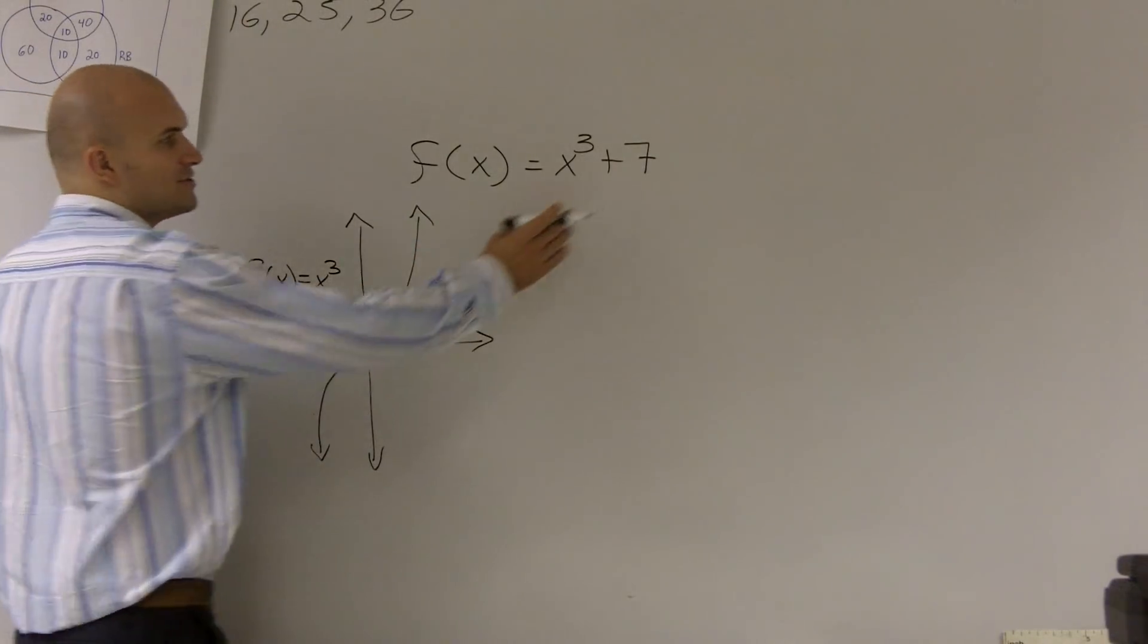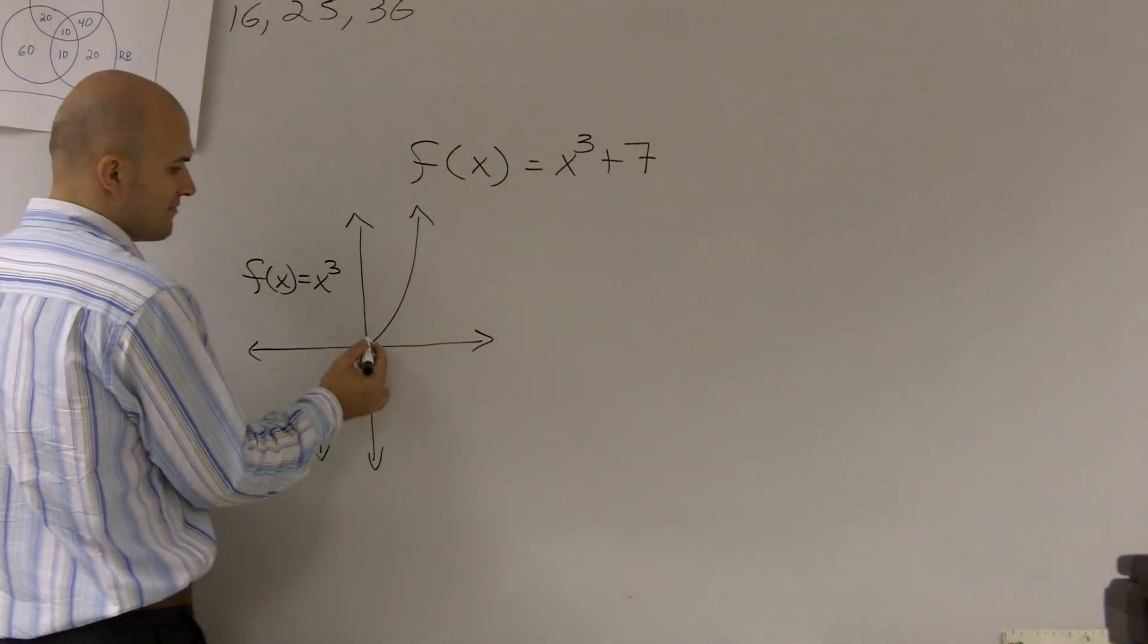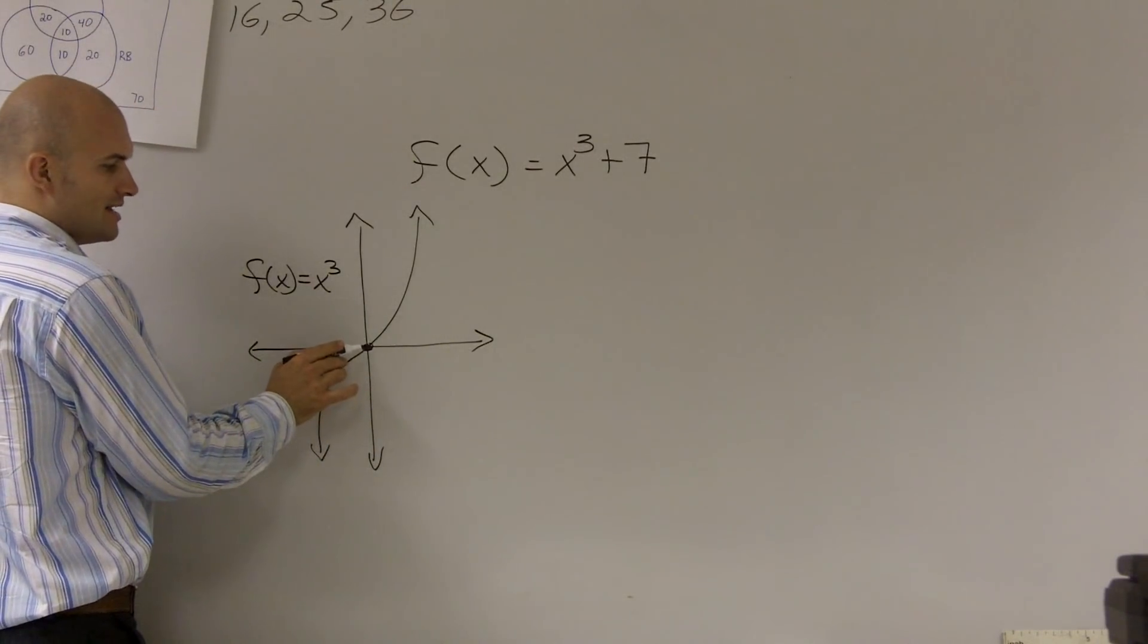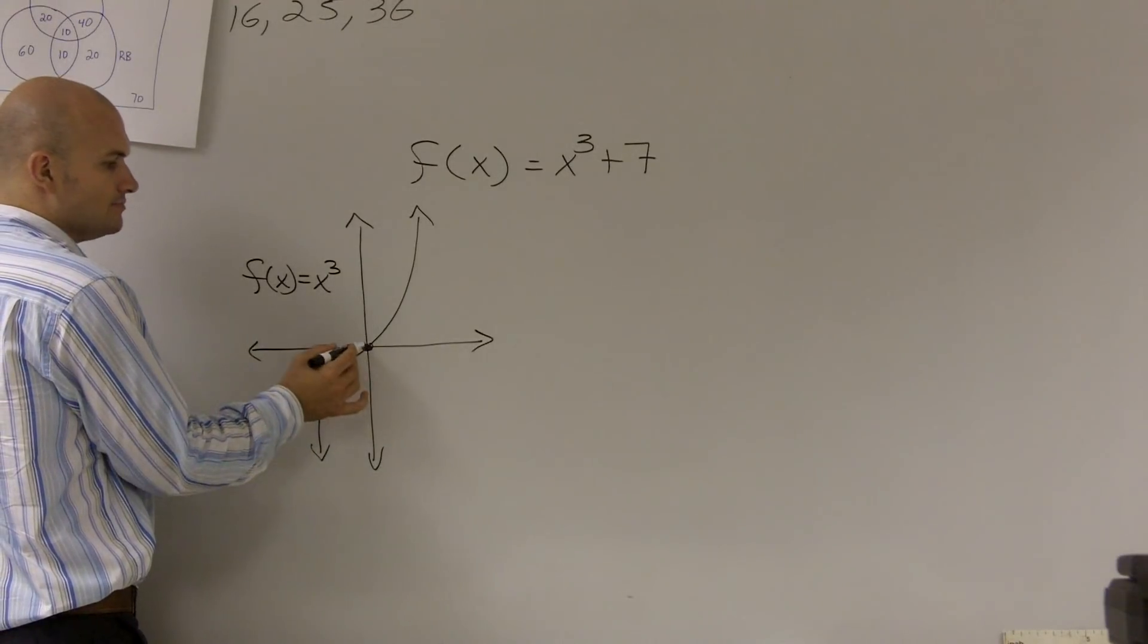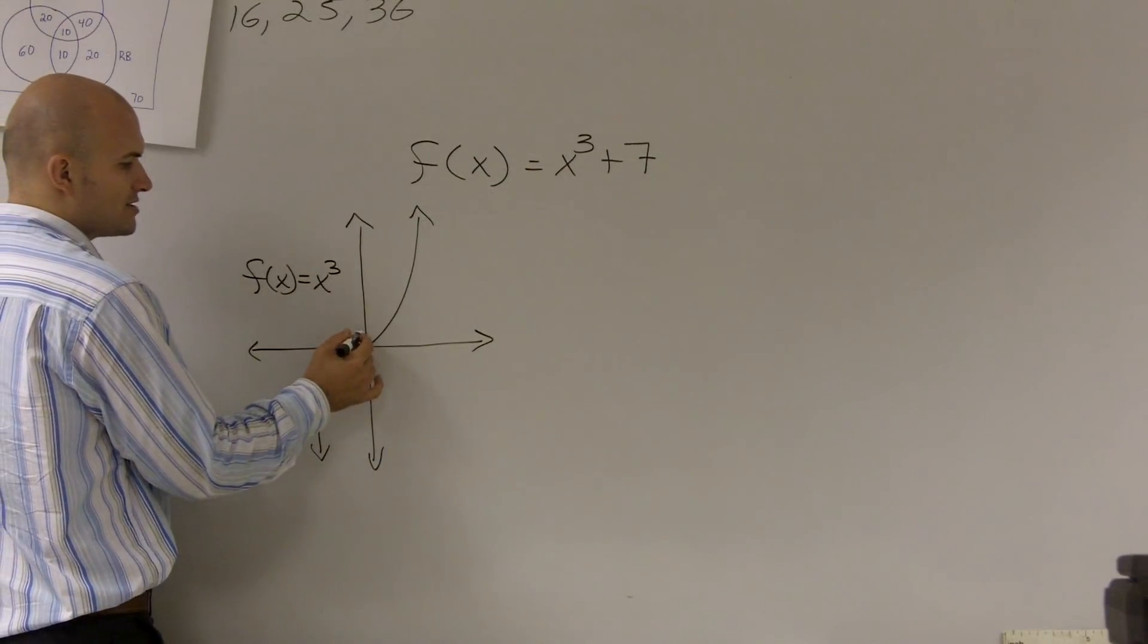So therefore, now my transformation, what I'm doing, this plus 7 is actually going to shift my whole graph up 7 units. So instead of crossing at x and y, x at 0, 0, I'm going to shift this point up 7 units.